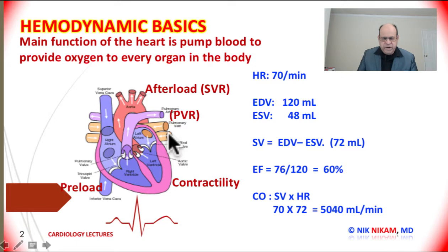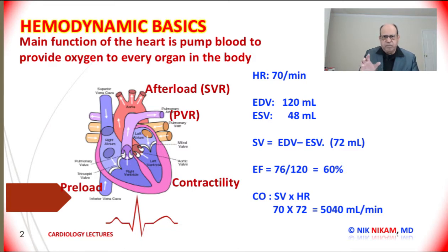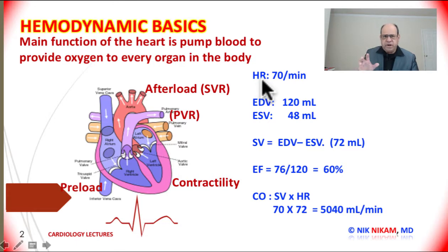Let us look at some basic numbers and see how we can determine how much blood is being pumped into the circulation each minute and what is the efficiency of this heart as a pump. Let us start off with the heart rate, which is the easiest one. Heart rate is the number of beats per minute.